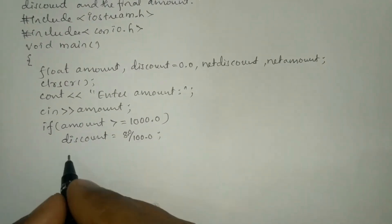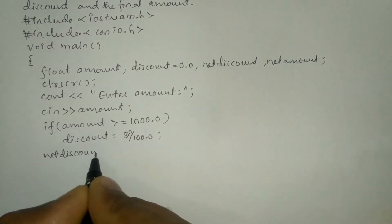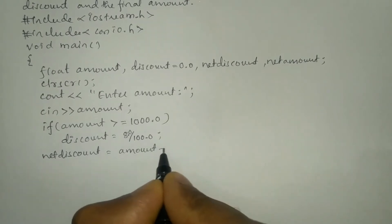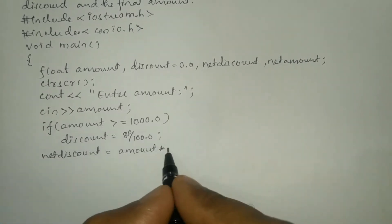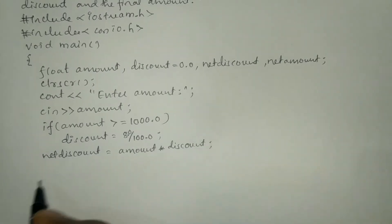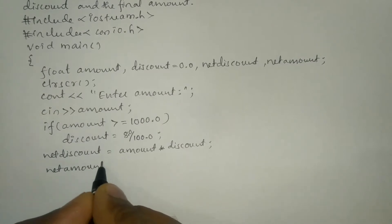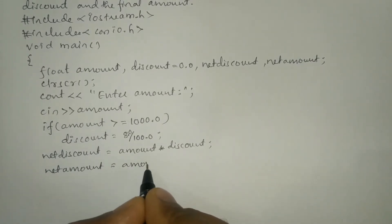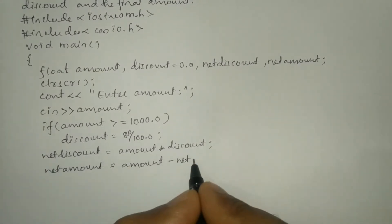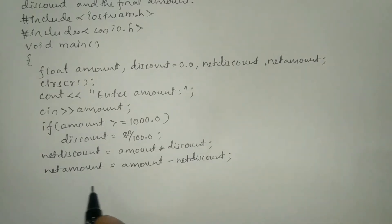Next, net_discount is equal to amount multiplied by discount, and put a semicolon. Now I'm going to calculate net_amount: net_amount is equal to amount minus net_discount, and put a semicolon.